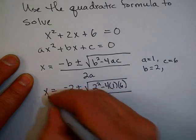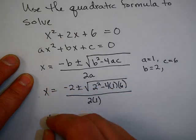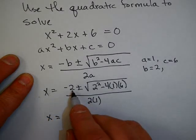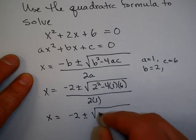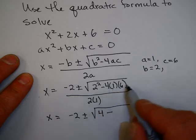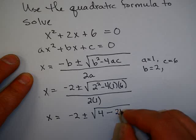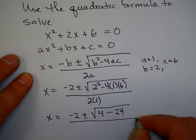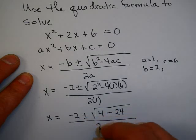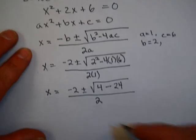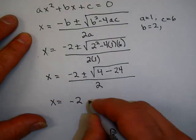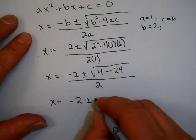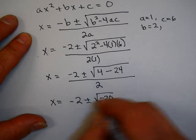Let's simplify. That gives us (−2 ± √(4 − 24)) / 2, and continuing, x = (−2 ± √(−20)) / 2.